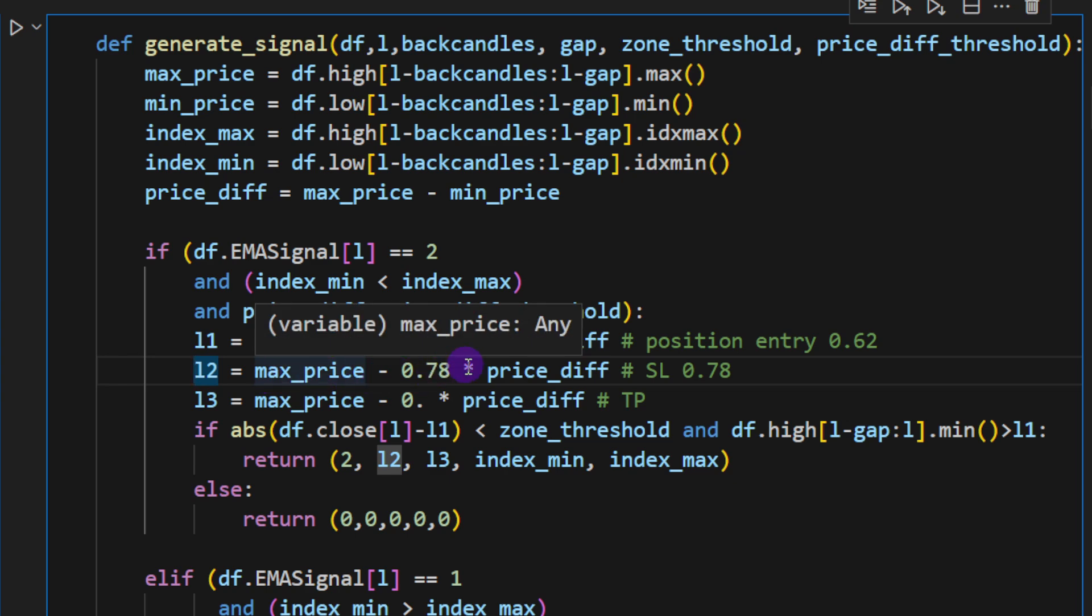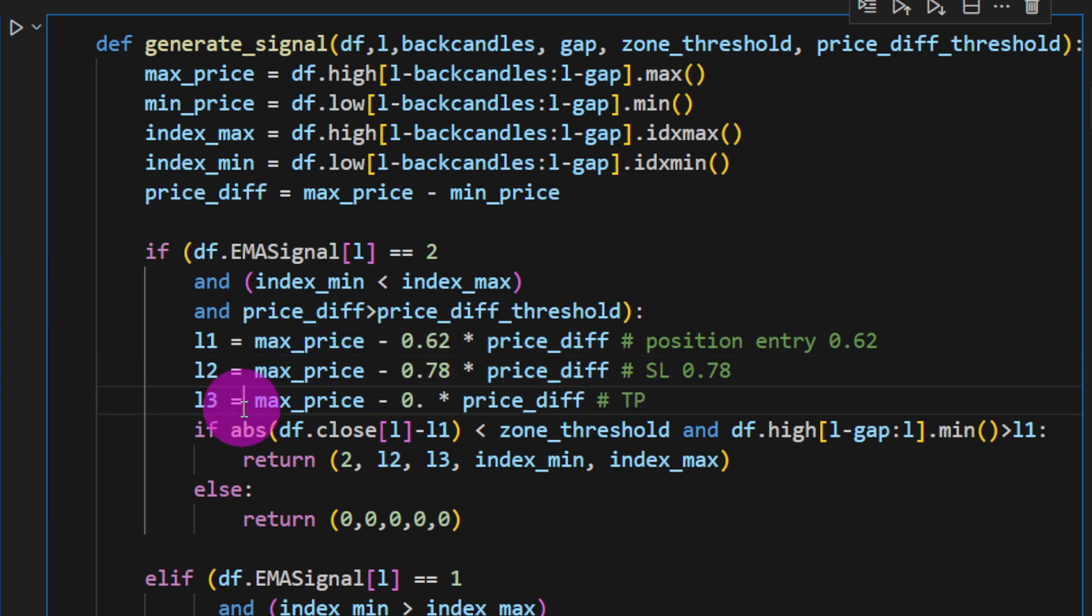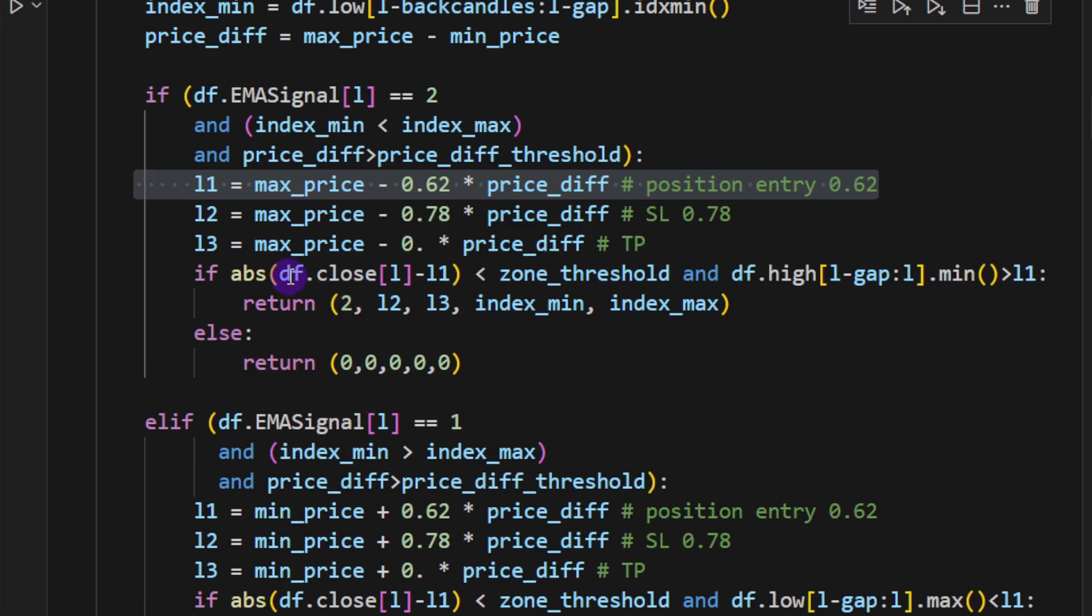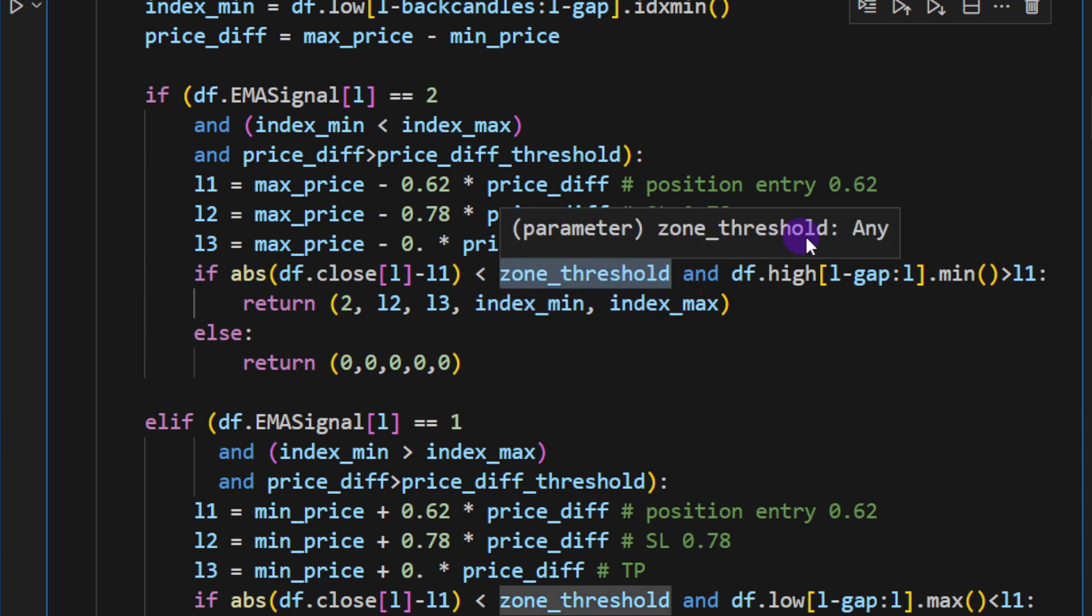If you want to check how I detected the fractals and their indexes, it's all done here in the function. We have the maximum price (the highest price in a certain slice), the minimum price (the minimum between the lower prices), and then the indexes of these two. The price difference is the difference between the maximum price and the minimum price.